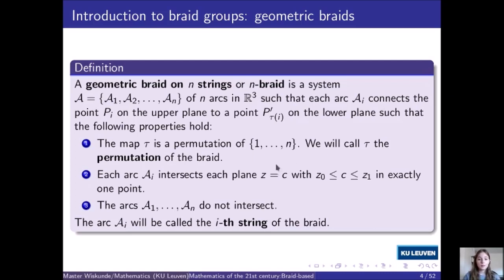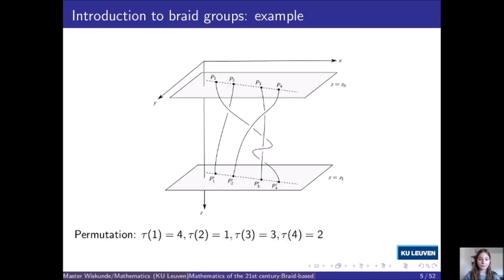Also called an n-braid, as a system of n arcs in R³, such that each arc Aᵢ connects the point Pᵢ on the upper plane to a point P'_τ(i) on the lower plane, such that three properties hold. First of all, this map τ has to be a permutation, meaning that the points on the upper plane are all connected to different points on the lower plane. We call τ the permutation of the braid. The second property is that each arc should intersect every horizontal plane between the upper and the lower plane exactly once. And finally, the arcs are not allowed to intersect each other. We call the arc Aᵢ the i-th string of the braid. For example, this is a braid on four strings, and the permutation is shown on the side.